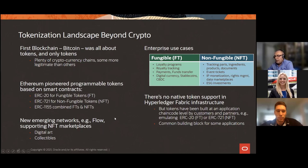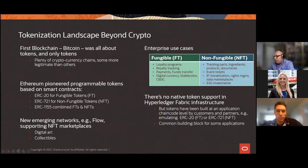In the enterprise, token use cases fall into two areas. Fungible tokens are used in loyalty and rewards programs, payments, digital currencies, stablecoins, and central bank digital currency. Non-fungible tokens represent something unique about each object — things like parts, ingredients, products, documents, event tickets, intellectual property monetization, rights management, data marketplaces, and ESG investments representing environmentally or governance-focused value. These have been gaining popularity across many industries.